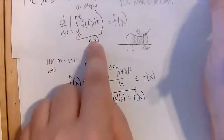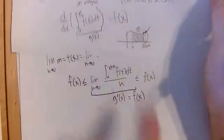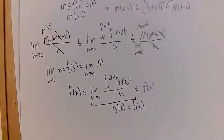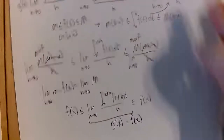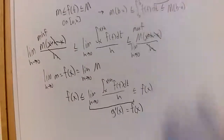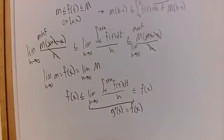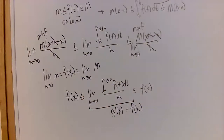I don't usually resort to proofs in this class because it's not an analysis course, but for the Fundamental Theorem of Calculus I figured if we were going to prove anything, it would be this. What this says is that the derivative of an integral — or the rate of change of an area function — is the function itself.